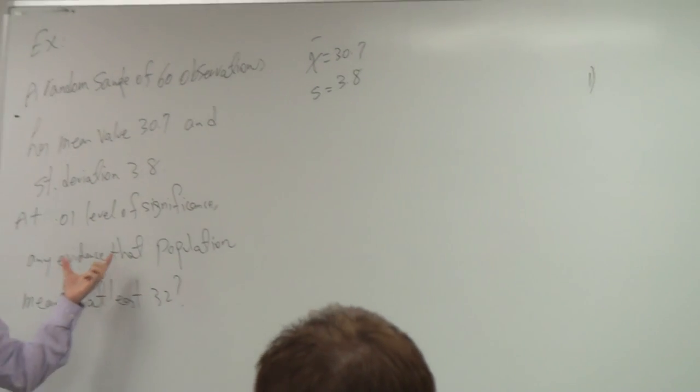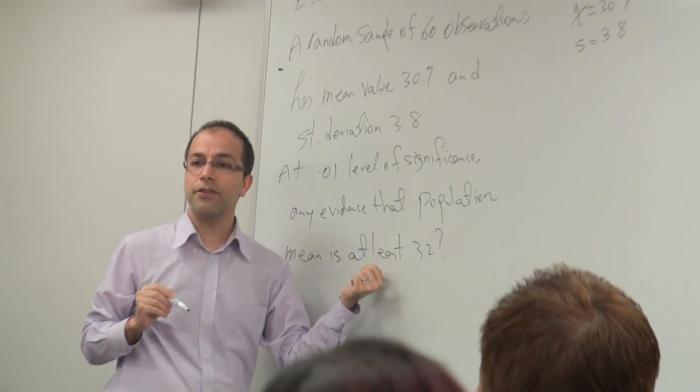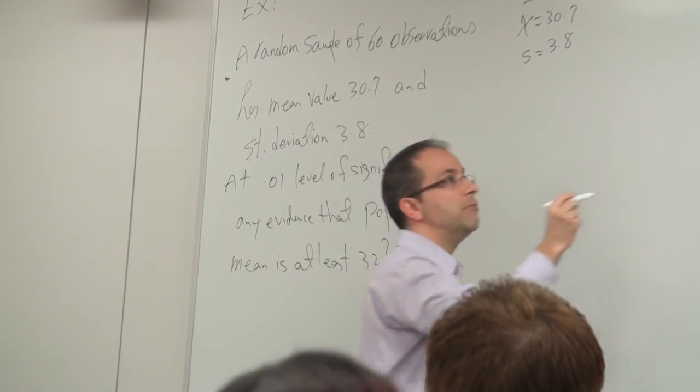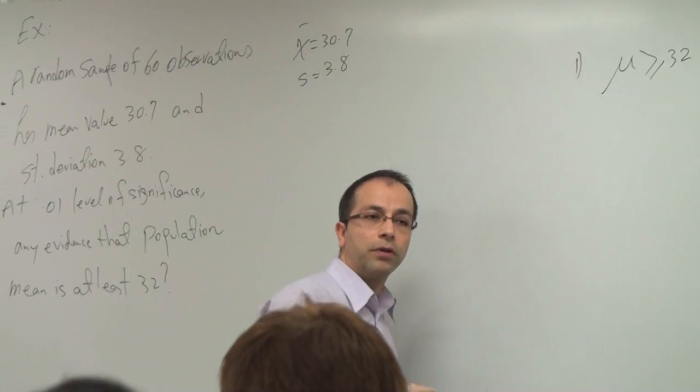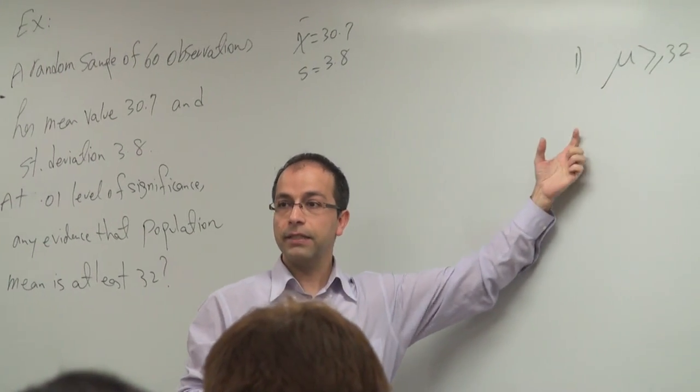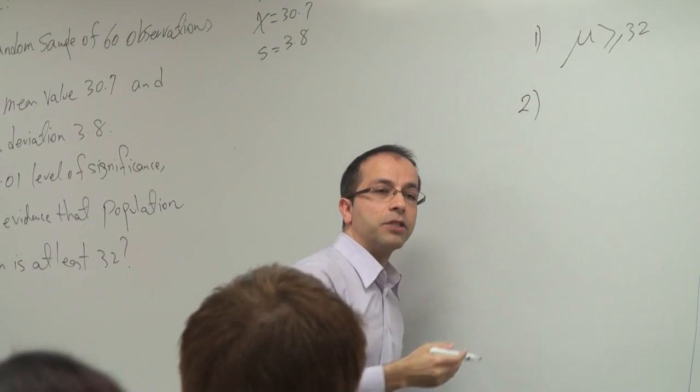What is the question? The population mean μ is at least 32. Then we write the opposite. What is the opposite of this one?